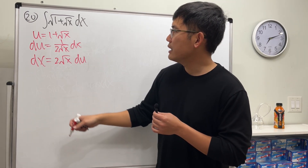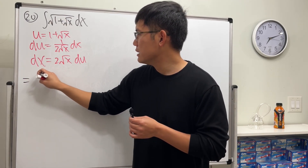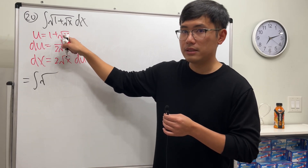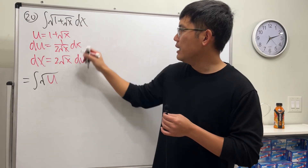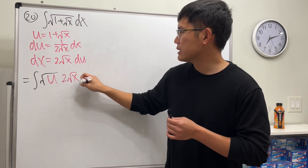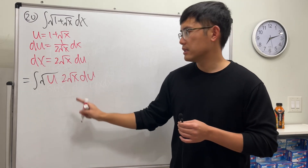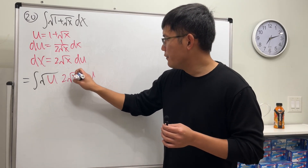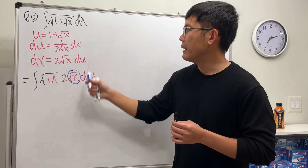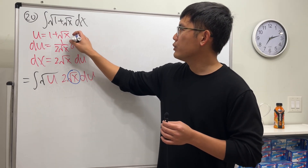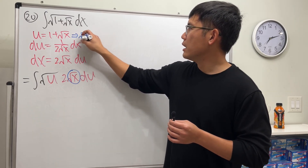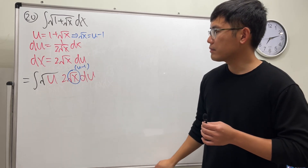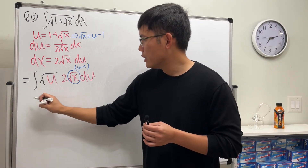We see that the integral has square root of (1 plus square root of x), which is u, and dx is 2 square root of x du. We still have x in the u-world, but don't worry — we can figure out what square root of x is by going back: square root of x equals u minus 1. So we just replace it with u minus 1.